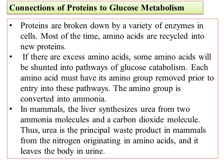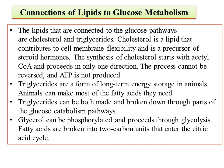In mammals, the liver synthesizes urea from two ammonia molecules and carbon dioxide. Urea is the principal waste product from nitrogen-containing amino acids and leaves the body in the urine. For lipid/fat metabolism: the lipids connected to glucose pathways are cholesterol and triglycerides. Cholesterol contributes to cell membrane flexibility and is a precursor for steroid hormones. Cholesterol synthesis starts with acetyl coenzyme A and proceeds in only one direction — it cannot be reversed and ATP is not produced. Triglycerides are a form of long-term energy storage in animals.